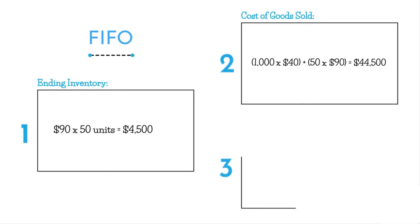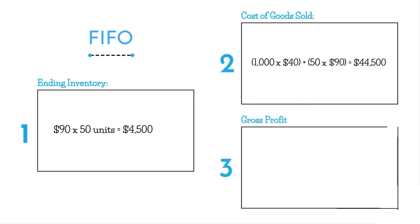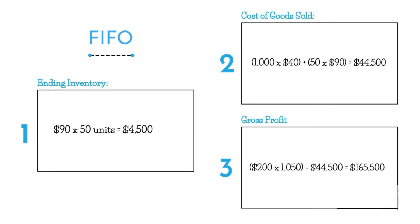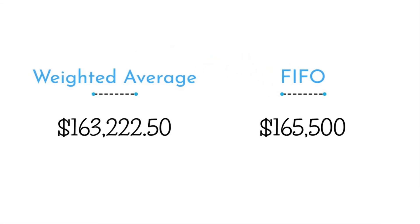Under FIFO, gross profit is the $200 selling price times 1,050 units sold, minus cost of goods sold of $44,500, resulting in a gross profit of $165,500. Because the earlier, cheaper units were put into cost of goods sold, FIFO produces a higher gross profit compared to weighted average.